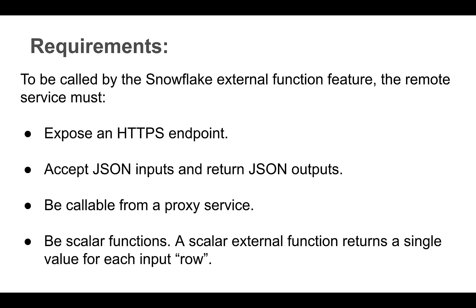For a remote service to be called by the Snowflake external function feature, the remote service must expose an HTTPS endpoint, accept JSON inputs and return JSON outputs, the function must be callable from a proxy service, and finally it should be a scalar function. Currently, external functions only support a scalar contract, meaning the remote service must return a single value for each input row.